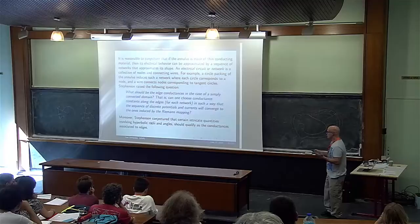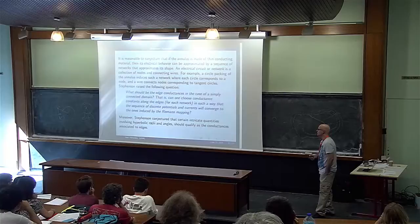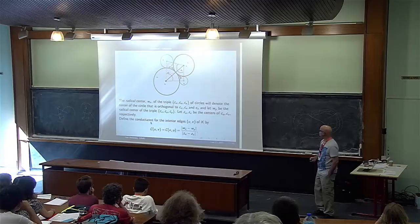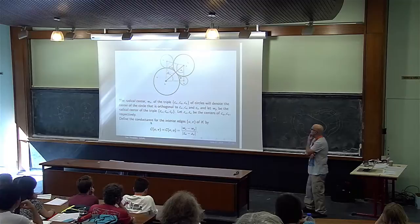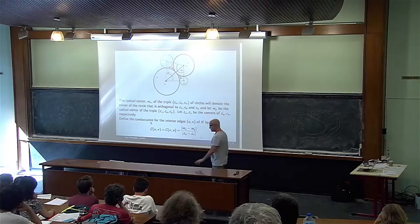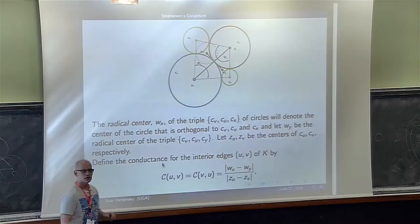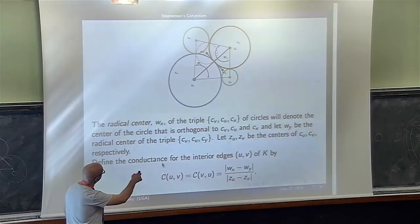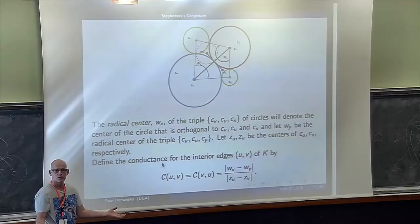The question Stephenson raised in the 90s was: what is the right conductance to choose on edges so that when you run this electrical system approximation — approximating the shape of the annulus and choosing conductances rightly — you get a conformal map? Now look at this picture. We see the blue circle and the red circle. Just imagine the contact graph is a triangulation, so we'll have two green circles tangent to both, and no more.